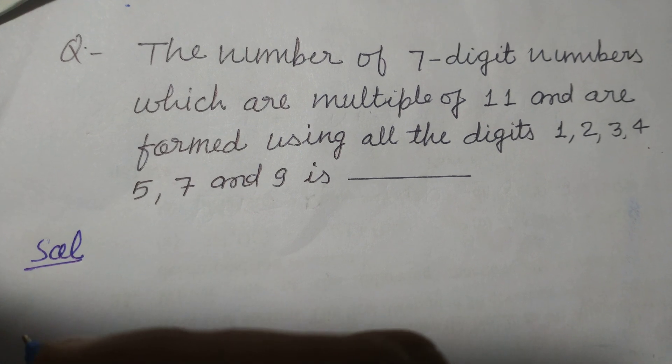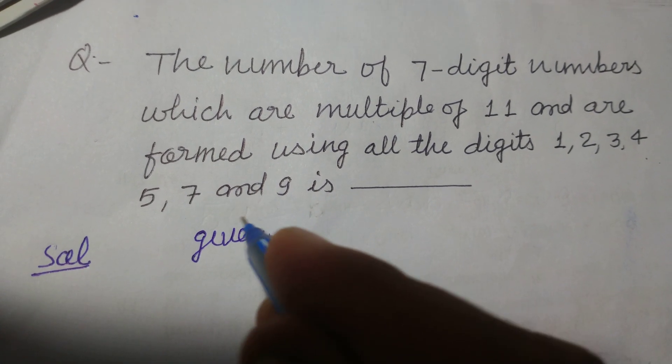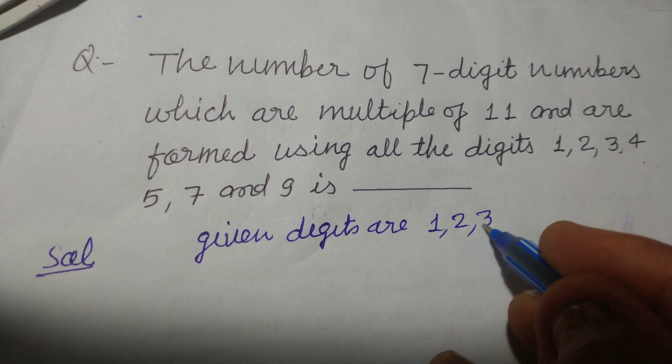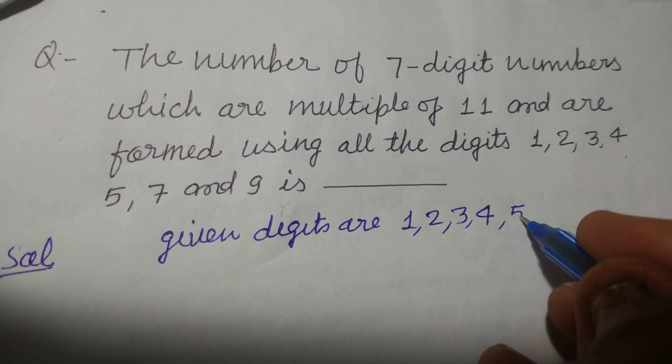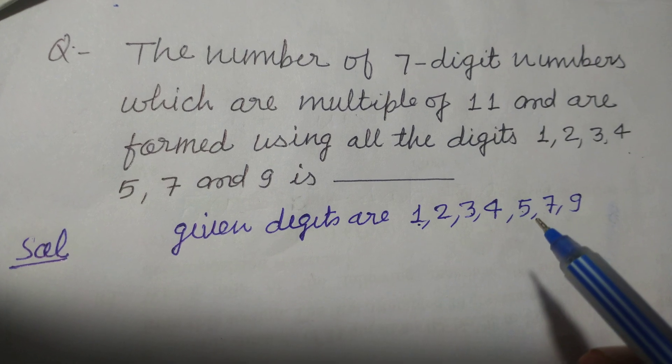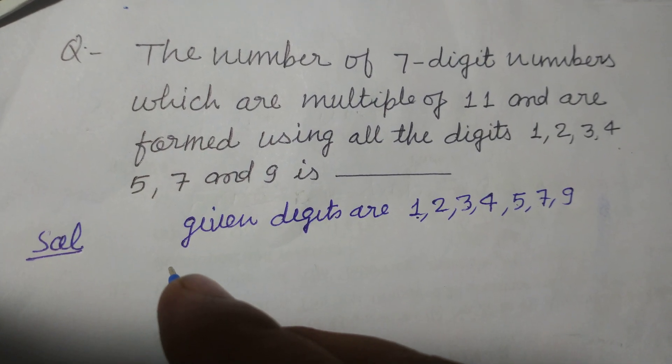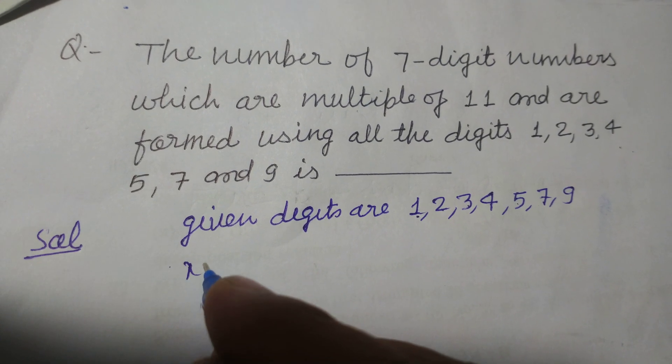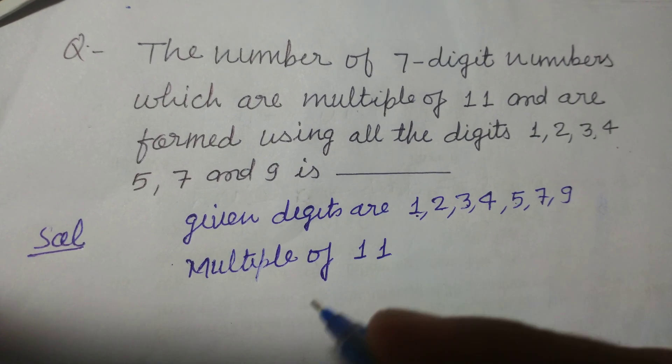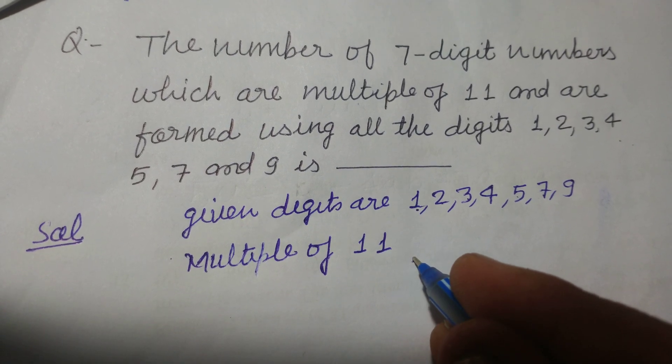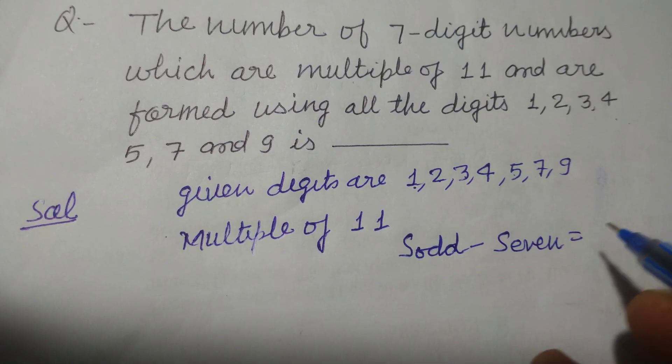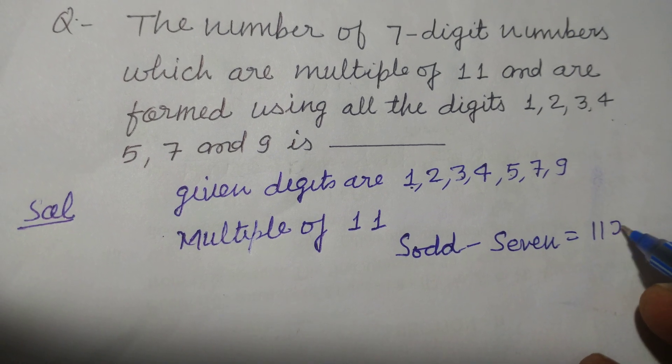So student, this question was asked in JEE Mains 2022 June attempt. Solution of this question, we start here. Given digits are 1, 2, 3, 4, 5, 7, and 9. Total are 7 digits. And you know, the divisibility rule of 11 or multiple of 11 is: the sum of odd position digits minus sum of even position digits should be multiple of 11 or 11x.